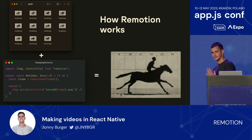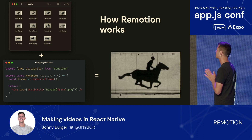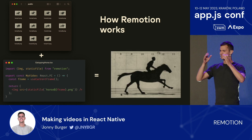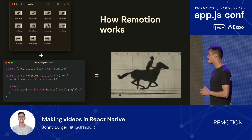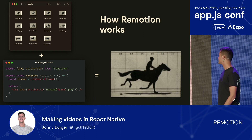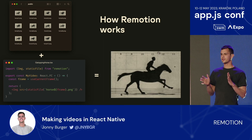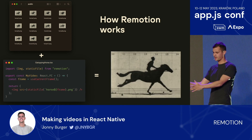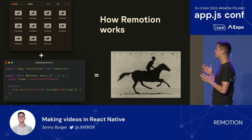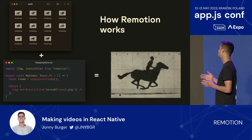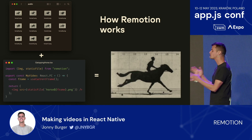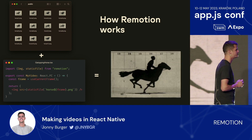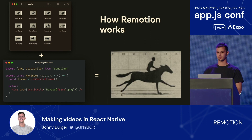Let's go to the basics. How does a video work? I was inspired by the Galloping Horse example — maybe you have that sticker on your laptop. The Galloping Horse shows that a video is essentially just a series of images that change over time. And instead of doing this imperatively frame by frame, we do this in Remotion in a declarative way. We use a hook to get the current time, and based on that, render an image. This is how you would do the galloping horse in Remotion.